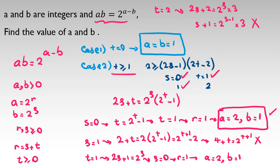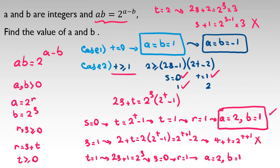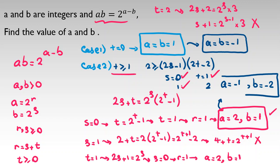So for the positive case we get A equals B equals 1 and A equals 2, B equals 1. Since we said without loss of generality both A and B are positive, we now include the negative cases: A equals B equals negative 1, and A equals negative 1, B equals negative 2. This gives four total answers for the problem.